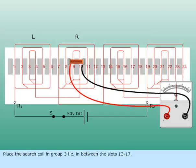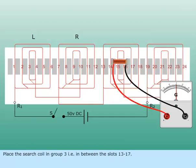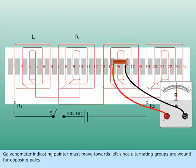Place the search coil in group 3, i.e., in between the slots 13 to 17. Galvanometer indicating pointer moves towards left since alternating groups are wound for opposing poles.